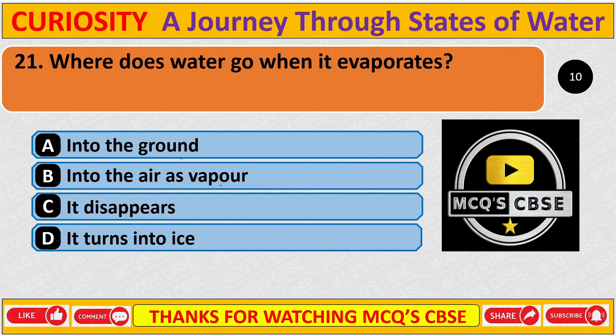Where does water go when it evaporates? The correct answer is B: Into the air as vapour.